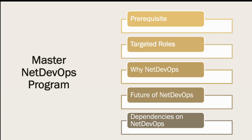Net DevOps is a framework and an architecture where we have many different components — such as using a scripting language like Python, using automation skills, using configuration management systems such as Terraform or others available in the market, and adding a DevOps story on top of it.